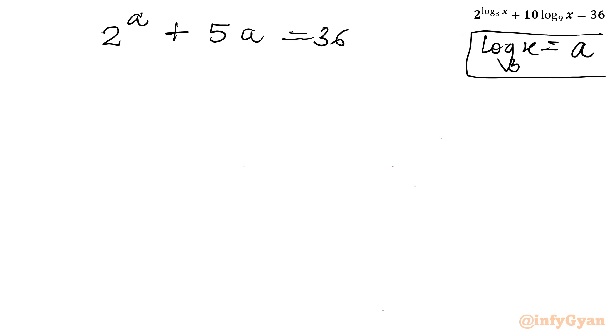Now I will take 5a away from both sides, so I can write 2^a equal to 36 minus 5a.